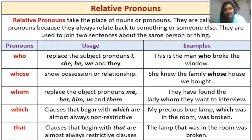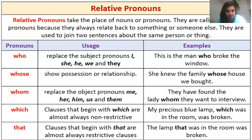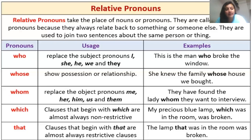'Whose' shows possession or relationship — it tries to show ownership or belonging. For example: 'She knew the family whose house we bought' — here 'whose' is referring back to the family whose house was bought. 'Whom' replaces object pronouns — it takes the place of the receiver of the action and relates back to a person. For example: 'They have found the lady whom they want to interview' — here 'whom' relates back to the lady being found.